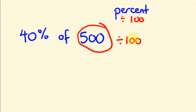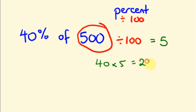Five hundred divided by hundred — I am going to take that first. Five hundred divided by hundred is five. So forty percent, I have to calculate: forty into five is two hundred. I am going to find out five hundred divided by hundred equals five, and then multiply that value.